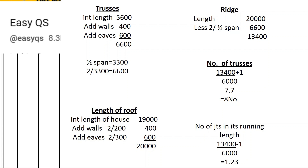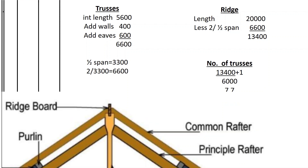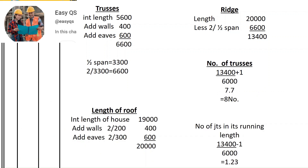For the ridge board, the ridge board will span the total length of 20 meters minus the two half-spans, giving 13,400 — that is where the trusses are distributed and the ridge board runs. How many joints will we have on the ridge board? That's 13,400 divided by 6,000, minus one, which gives 1.23 — say two joints.